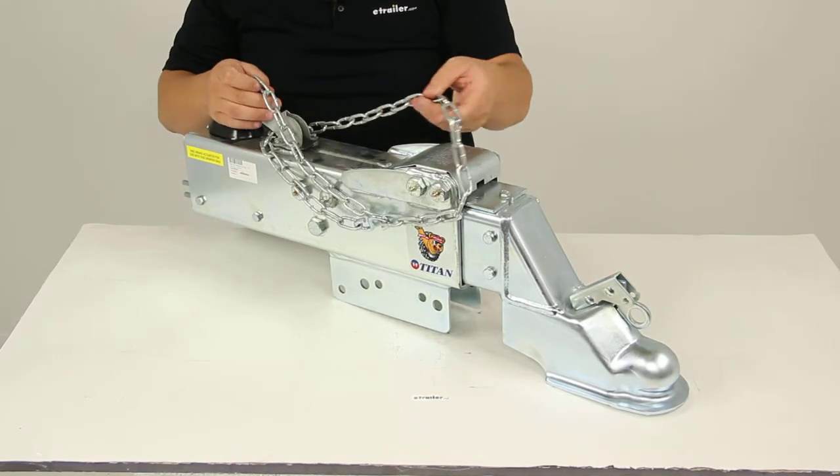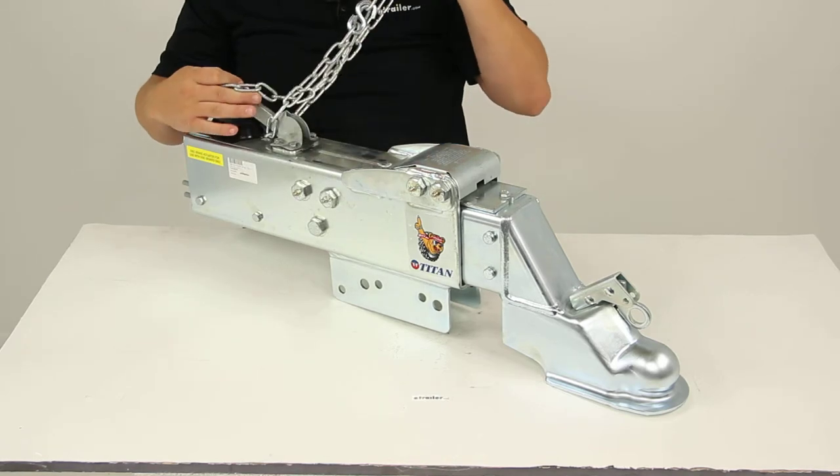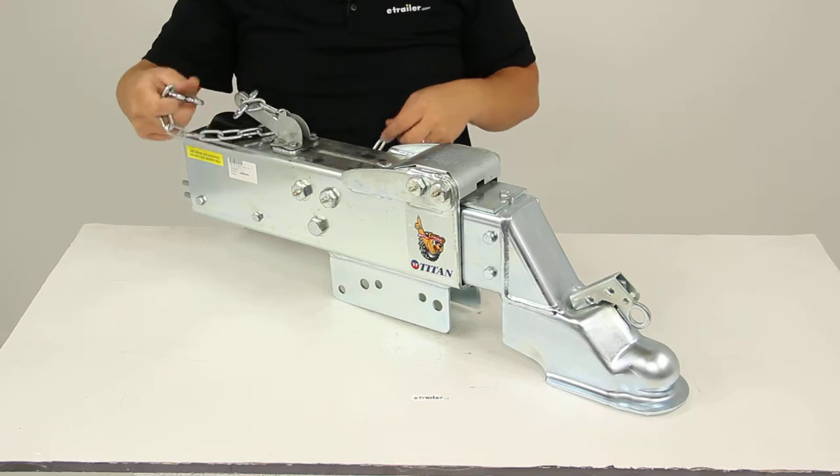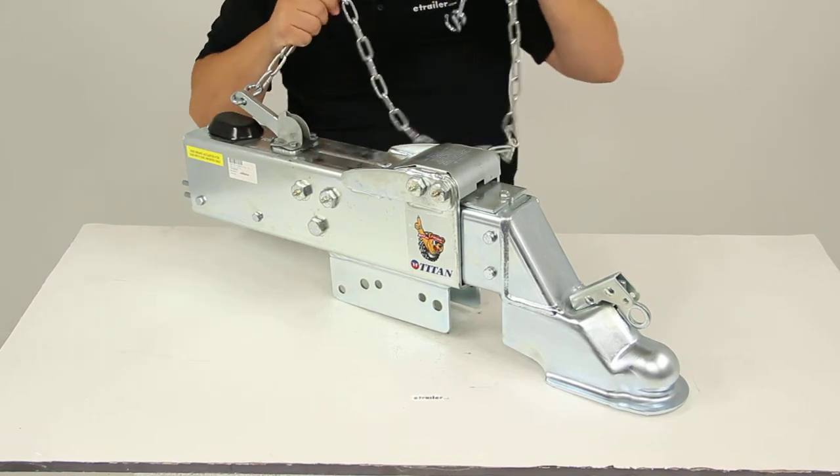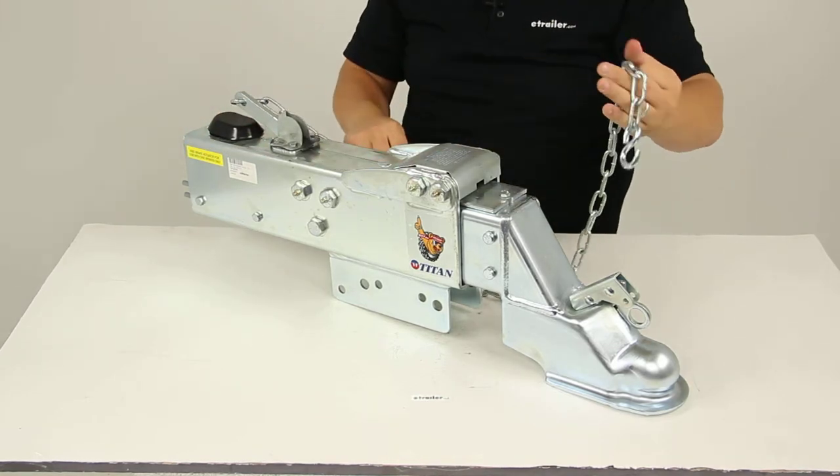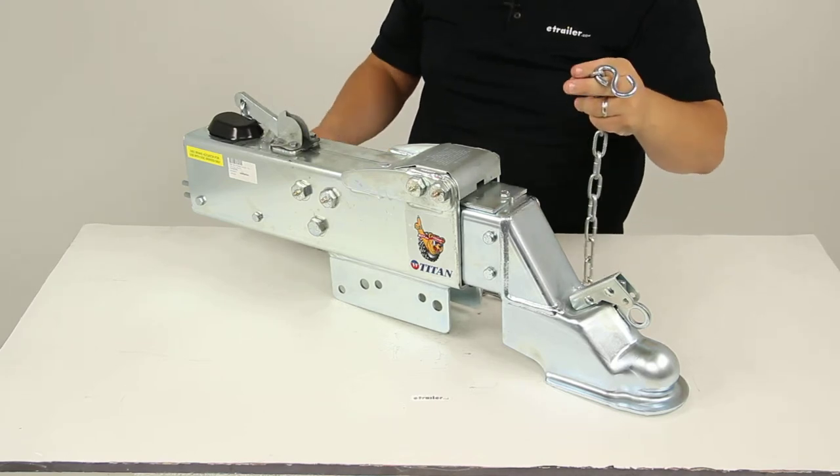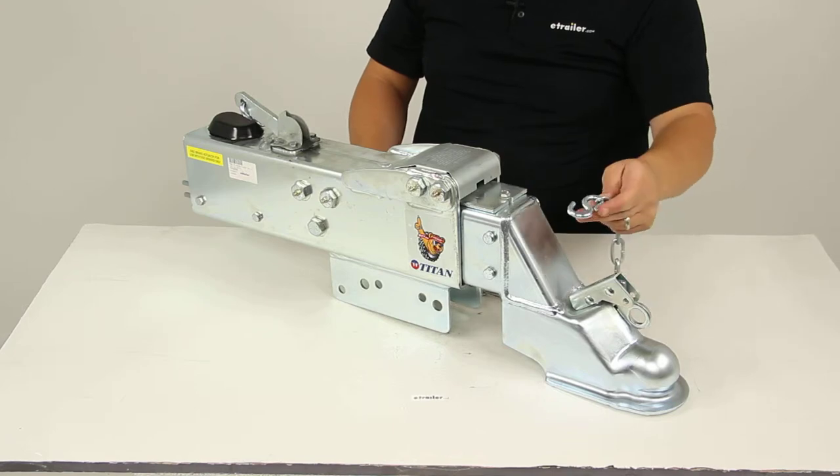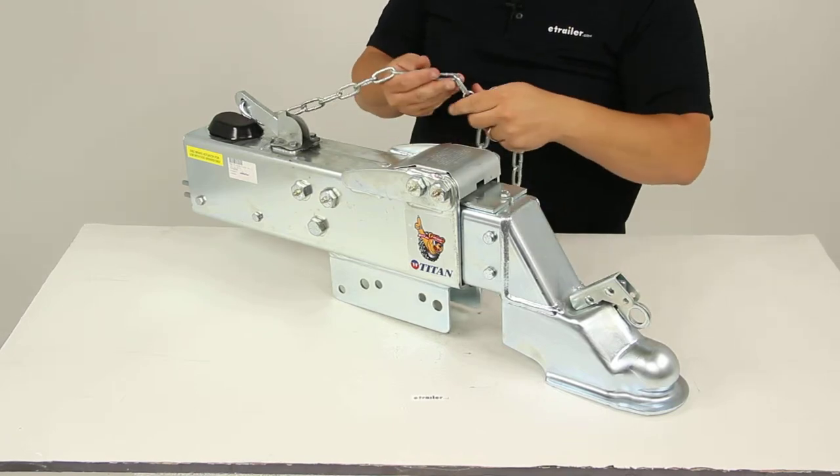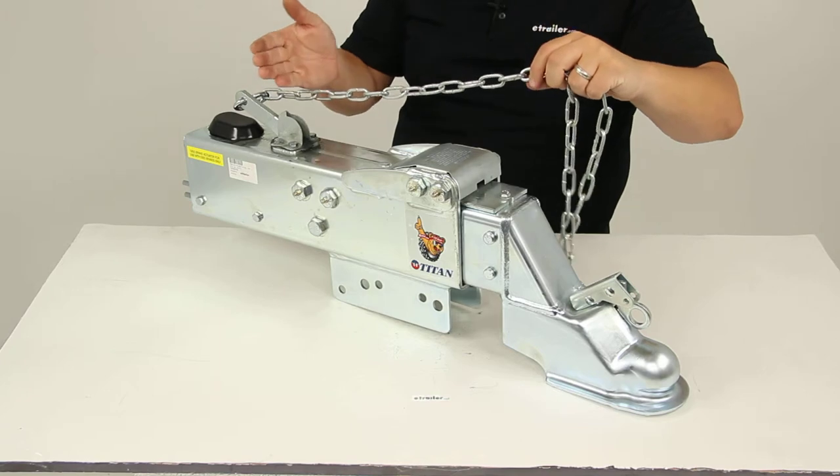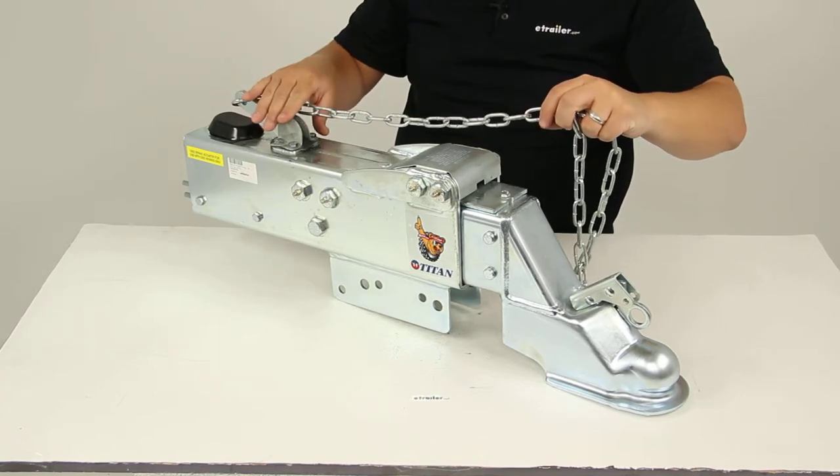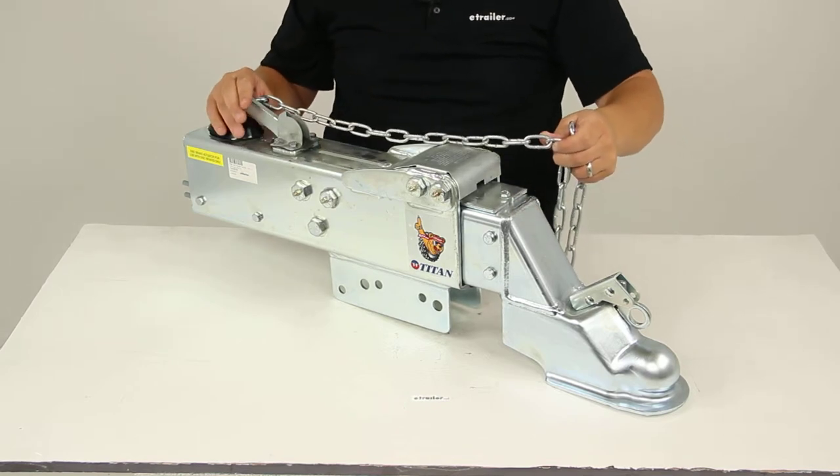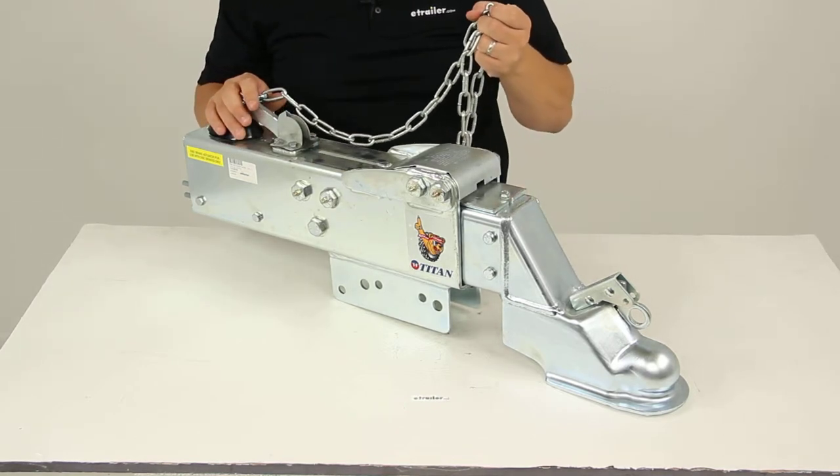This does also include the breakaway kit, which is this portion here. So the way that this system works is the other end of the chain connects to your vehicle. If your trailer and vehicle were to disconnect, this would pull the lever tight, bringing it back. And what that does is it's going to engage the brakes on your trailer, bringing the trailer to an eventual stop, so that's a great feature to have.